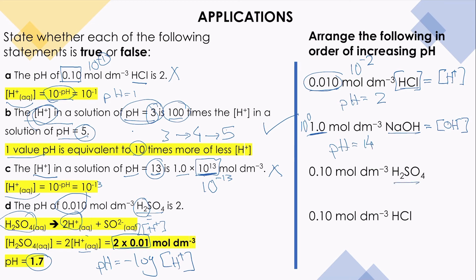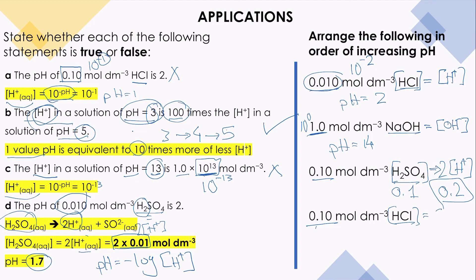Next, H₂SO₄ at 0.1 mol per cubic decimeter: it is diprotic, so [H⁺] = 2 × 0.1 = 0.2. The pH = −log(0.2), which is less than 1. Then HCl at 0.1 mol per cubic decimeter: since HCl is a strong acid, [H⁺] = 0.1 = 10 to the power negative 1, so pH = 1.